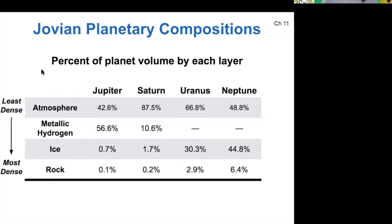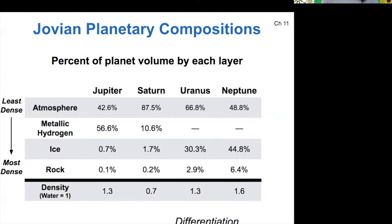These layers are organized by density. The atmospheric hydrogen is the least dense material. Metallic hydrogen is more dense, but not as dense as ices of ammonium and methane. The rock is the most dense of all. So again, we see that the process of differentiation has organized the gas giants. When we look at all of these together, this is where the average density of the planets comes from.